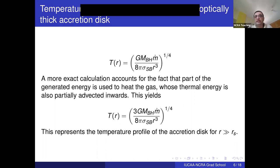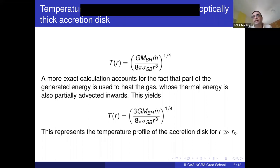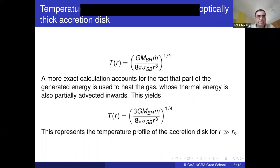If you do this more exact calculation, you still get the same result except the numerical factor is higher by a factor of 3. This is primarily caused by some gas being advected inwards and radiating at a lower radius and therefore higher temperature, becoming more luminous. This represents the temperature profile of the accretion disk for all r much greater than the Schwarzschild radius.